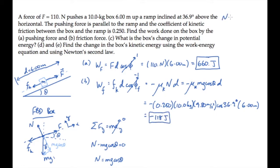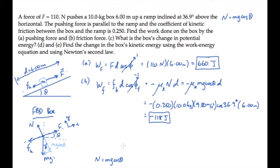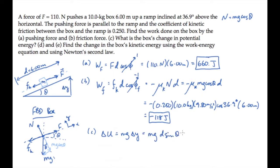Part C asks us for the change in the box's potential energy. Delta u equals mg times delta y, the change in height, and that is d sine of theta. Substituting the numbers gives us a change in potential energy of 353 joules.